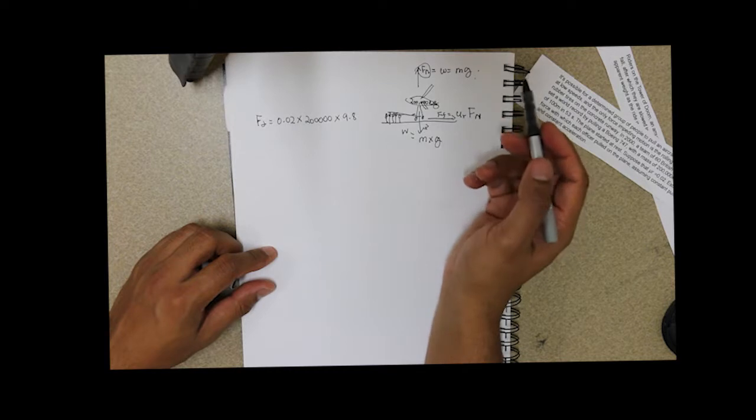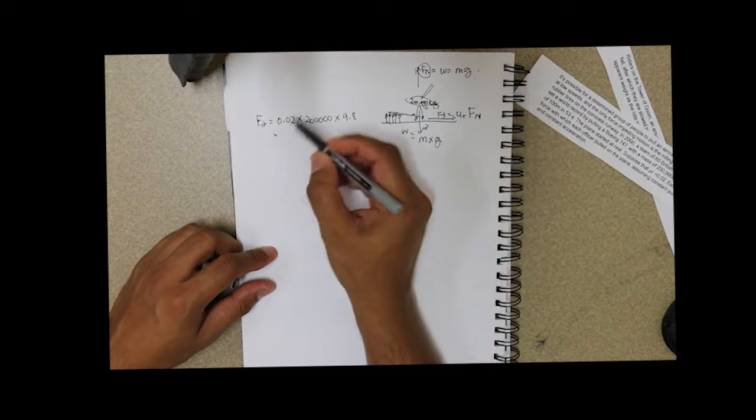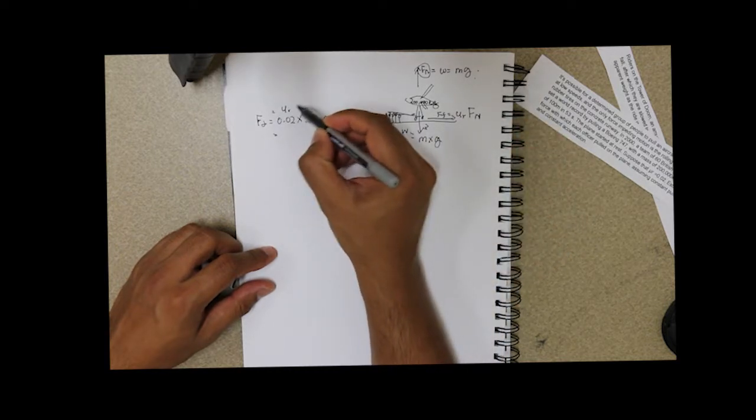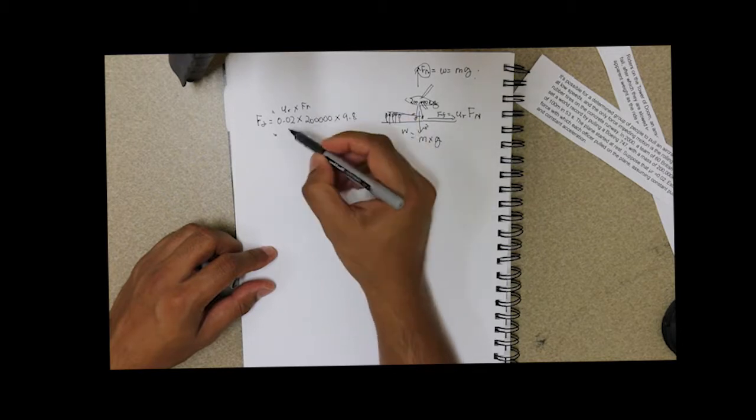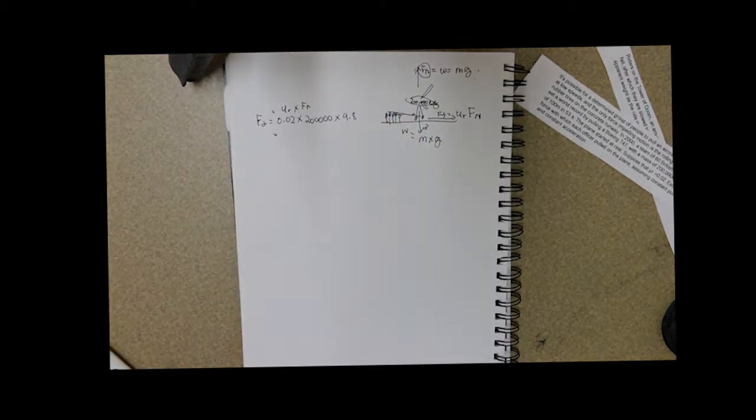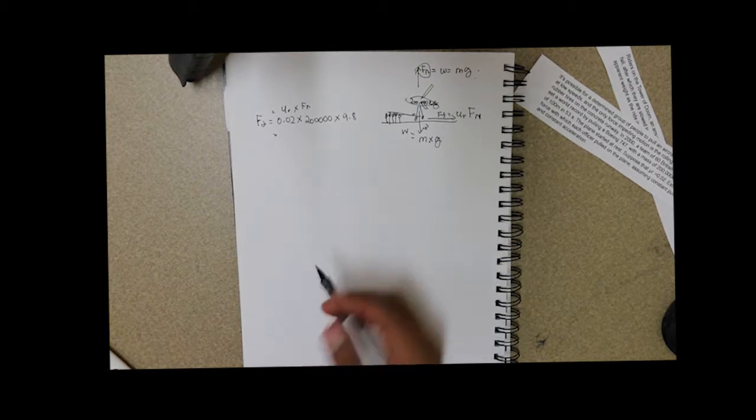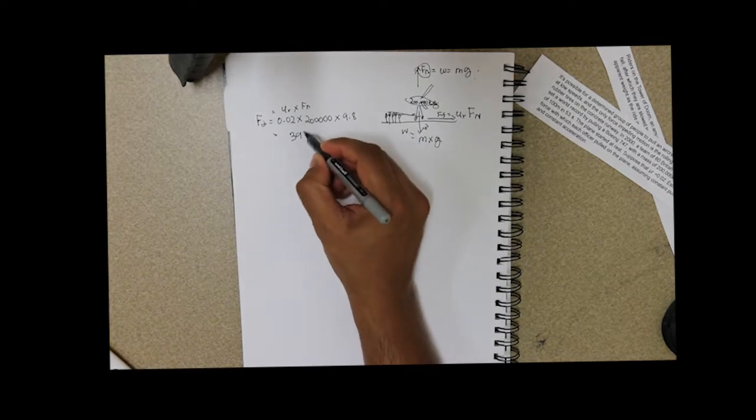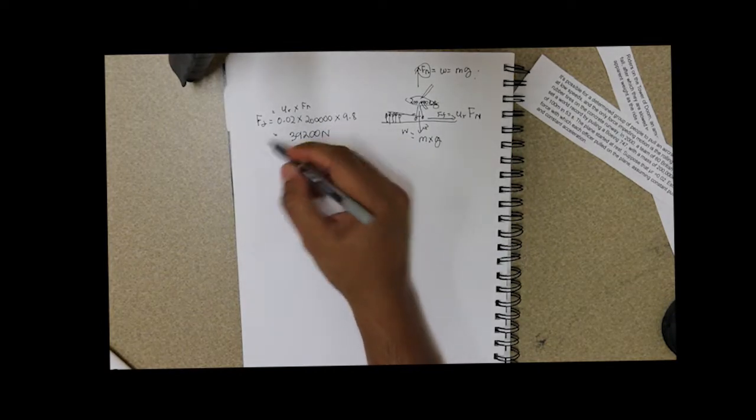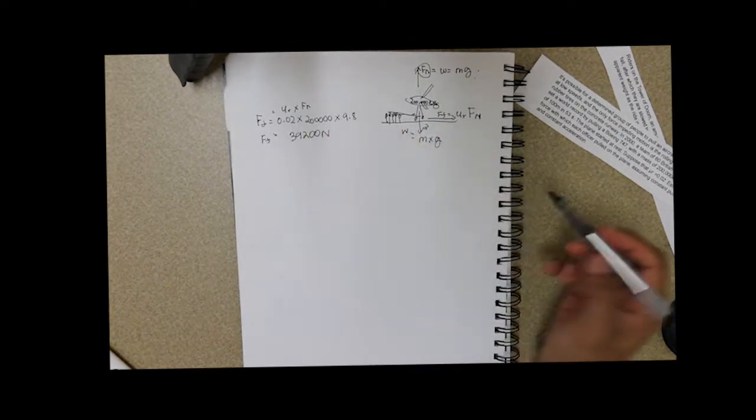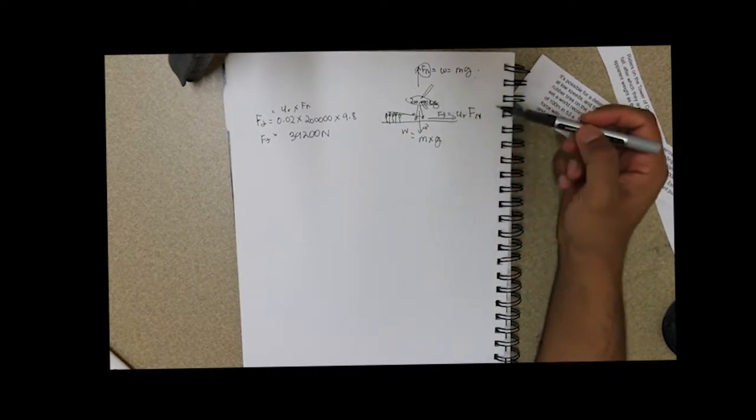So that is our force of friction, the coefficient of friction times the force normal, which gives us 39,200 newtons is the force of friction that the 60 officers need to overcome.